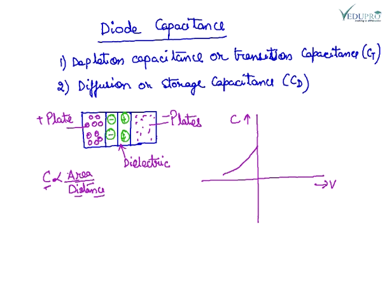In forward bias, when the depletion region is narrowing, the capacitance will increase.